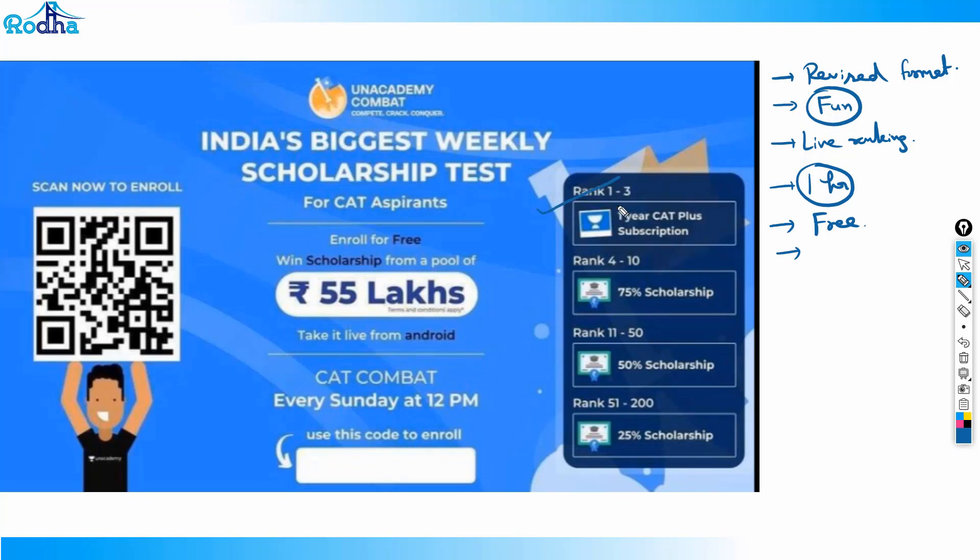This is one of your high quality tests absolutely free of cost. And now they have introduced some great rewards - rank 1, 2, 3 get 1 year subscription, around 20,000 or 75 percent scholarship or 50 percent. Those are great prizes they're offering. So get it live from your mobile app. This invite code you can put here: Ravi Rodha. It will ask you for invite code - it is absolutely free of cost. Put Ravi Rodha and the link I'll put in description. Just enroll from there and do give this every Sunday at 12 pm.